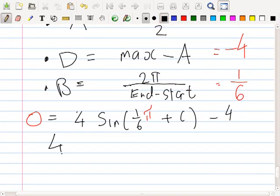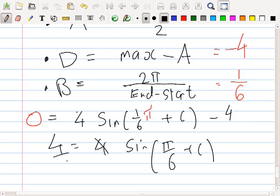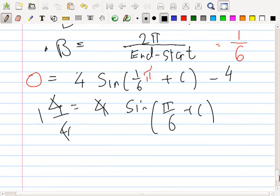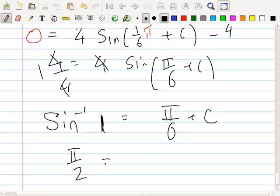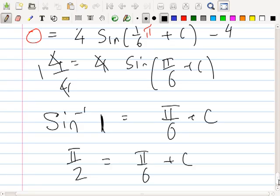Then, what you do, once you have the A, D, and B, you put it back in. So, A, four. B, one over six. C, you don't know. D, minus four. And then, you put in the theta and you put in the value. So, pick any point on the graph. Pi zero. So, you put in for theta pi and y is zero. And this formula will give you the last piece of information, the C.